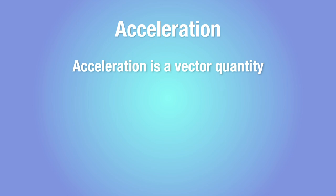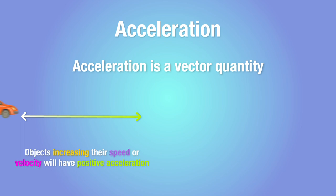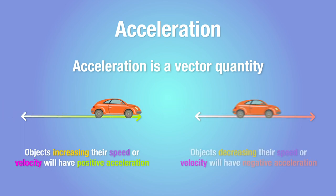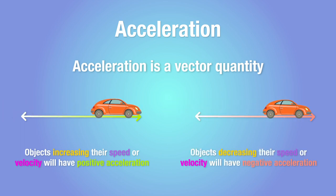This is the reason why acceleration is a vector quantity, regardless of whether we derive it from speed or velocity. Acceleration always shows not just the magnitude of change of speed, but also whether the change was positive or negative.